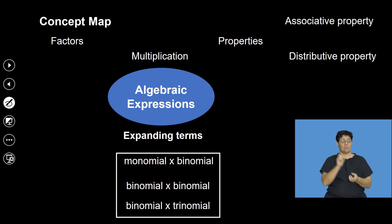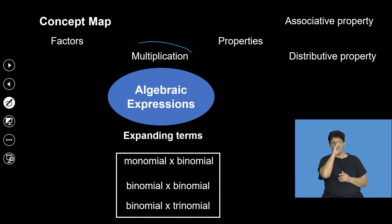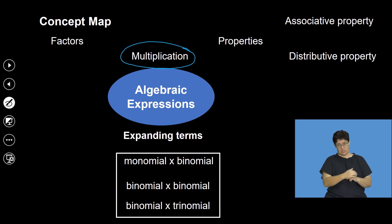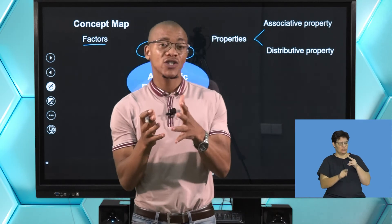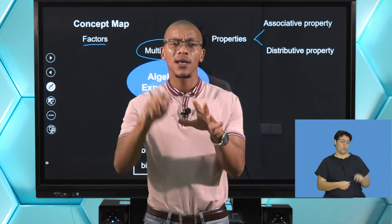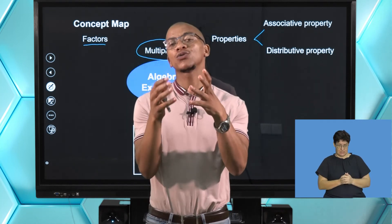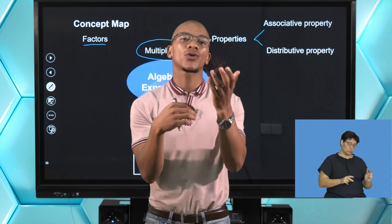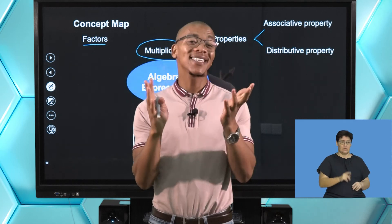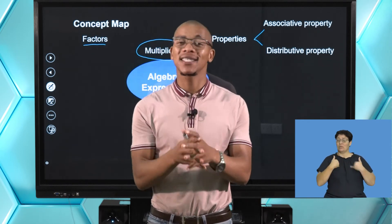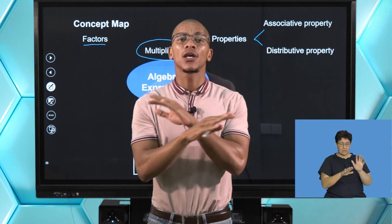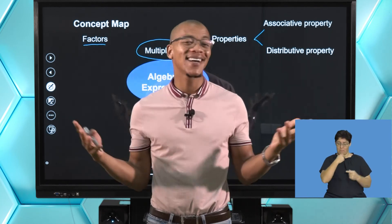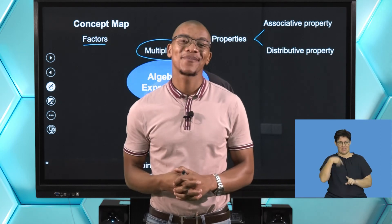To summarize using our map: the big idea is multiplication, with factors, and the two important properties — associative and distributive. Then the different types of expansion: monomial, binomial, and trinomial. Remember the prefix tells you how many terms you have: mono is 1, bi is 2, tri is 3. I hope you enjoyed yourself, made important notes, and followed the steps throughout. From me to you — mathematics is food for the soul. Until next time, thank you.